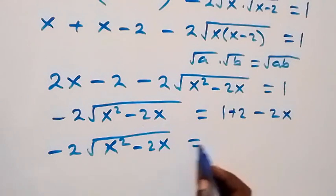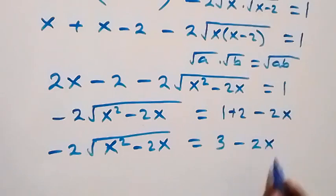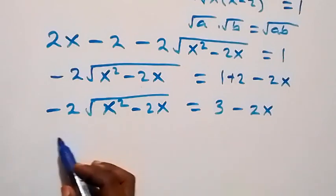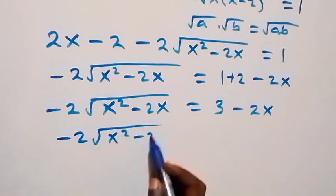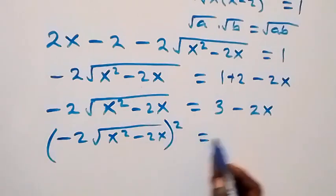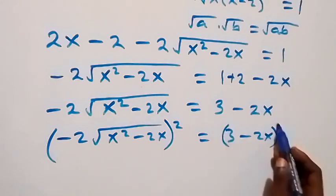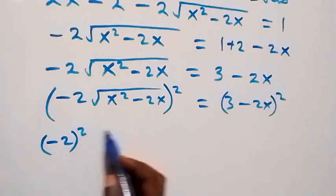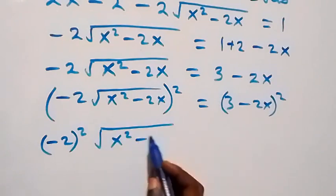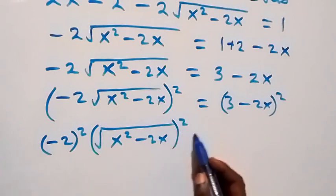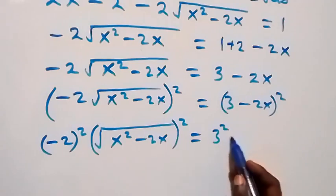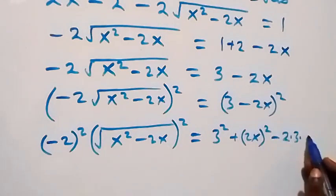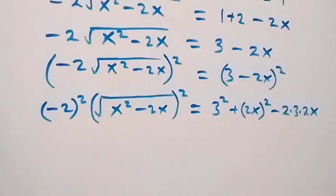So here let's take the square on both sides again. We have minus 2 times √(x² - 2x), all squared, equals (3 - 2x)² on the right side. This square affects the minus 2, so we have (-2)² then times (√(x² - 2x))² also squared, which equals 3² plus (2x)² then minus 2 times 3 times 2x.